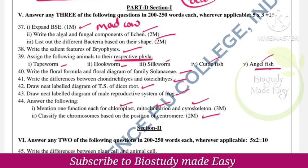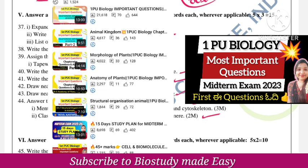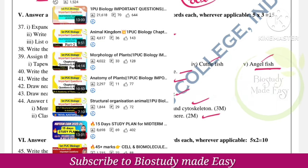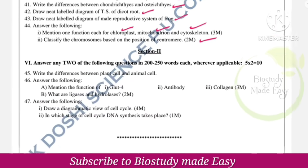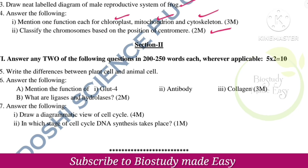Chromosome types: metacentric, sub-metacentric, acrocentric, and telocentric. Differences between plant cell and animal cell. Mention functions of GLUT4, antibody, and collagen — from the biomolecules chapter.